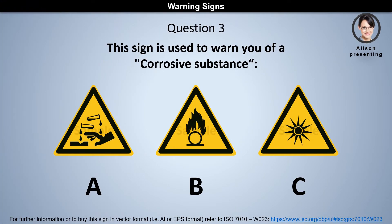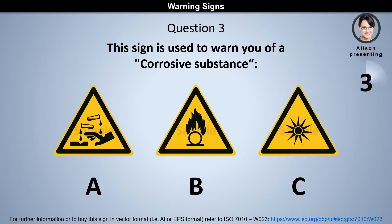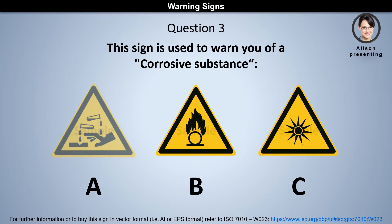Question 3. This sign is used to warn you of a corrosive substance. Is it A, B, or C? The answer is A.